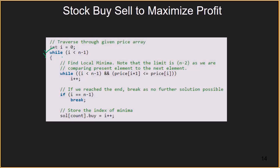We run a loop while i is smaller than n-1, meaning elements are yet to be processed. To find a local minima, we run an inner while loop with the condition that the price of the next element should be smaller than the current element — as long as this holds true, we keep incrementing i. Once we break out of the loop, we check if i has become equal to n-1. If so, there are no further solutions and we break out. Otherwise, we store the index of the local minima.